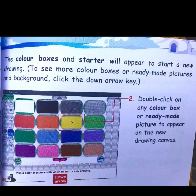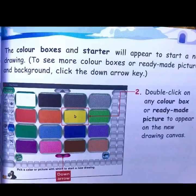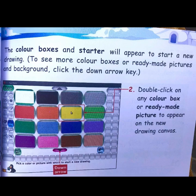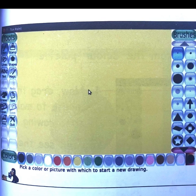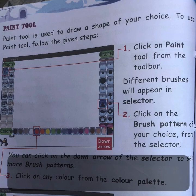You can choose any of the color boxes. The selected color or picture will appear on the drawing canvas. Here we have selected yellow color — now you can see the drawing canvas is yellow. We have selected the background color for the drawing canvas.